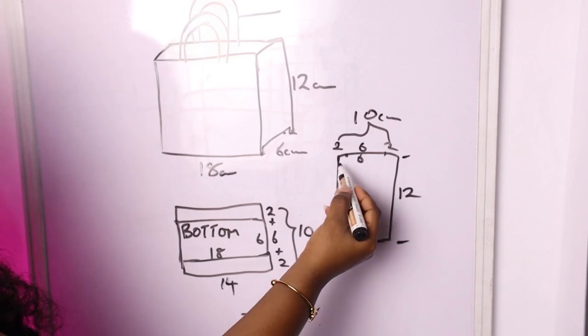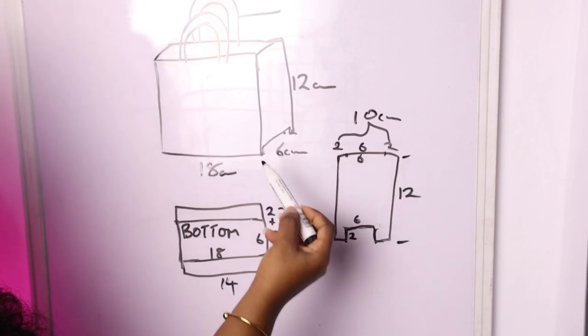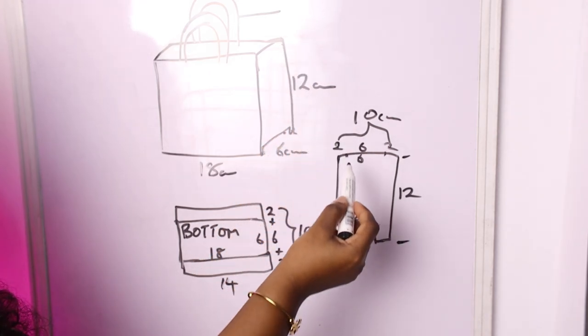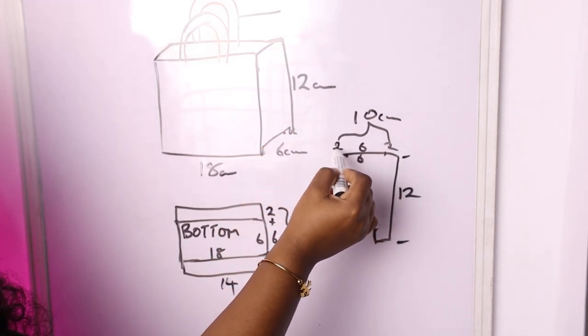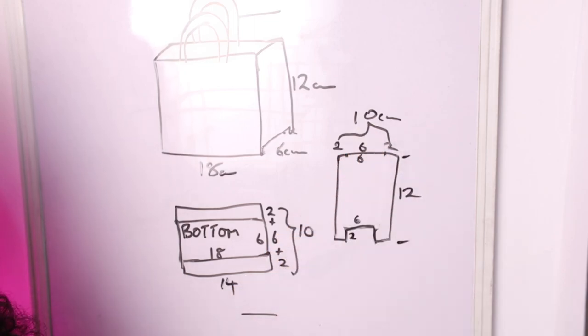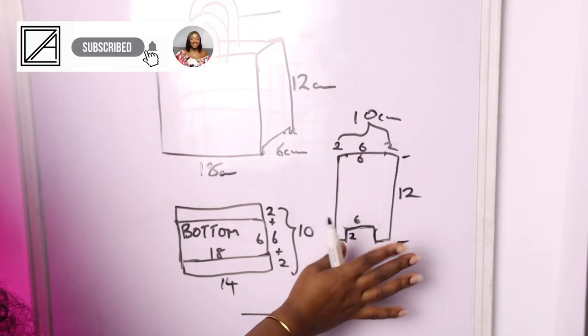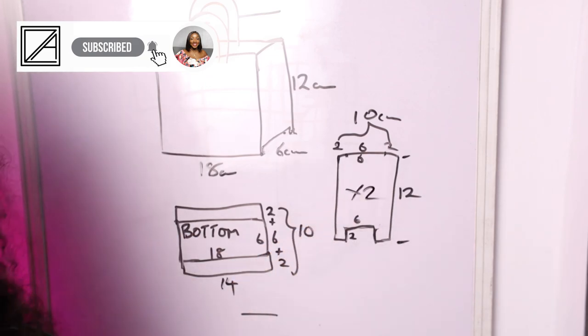So you're going to add two centimeter to the width of your bag. So this one that's just saying 6 by 12, you're going to add, that's 4 now, 2, 2, making it 10. Then the entire height, which is 12. This is your side piece. And anything you're doing, you're cutting two.